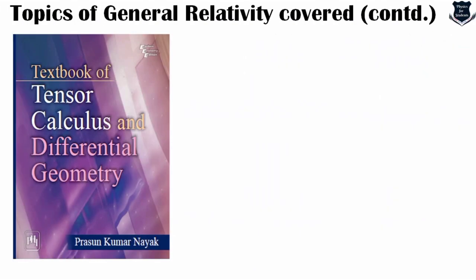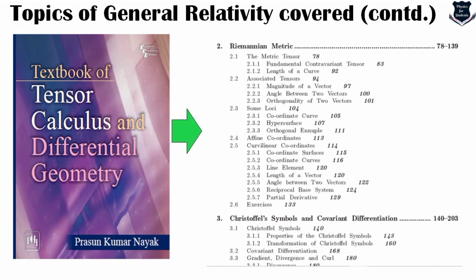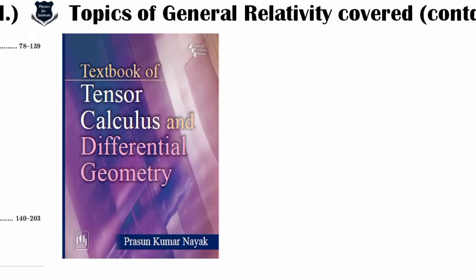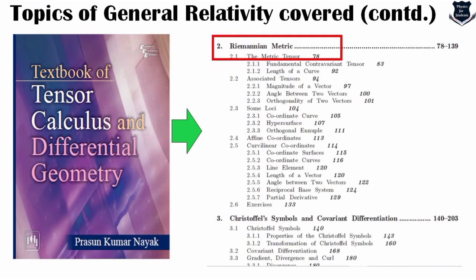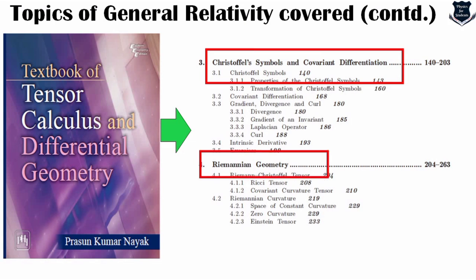Prasun Kumar Nayak's Tensor Calculus and Differential Geometry completely covers Riemannian metric, Christoffel symbols, covariant differentiation, and Riemannian geometry. I'm not going through the entire book, just giving glimpses to show that these books are very good and this is how the topics are covered.